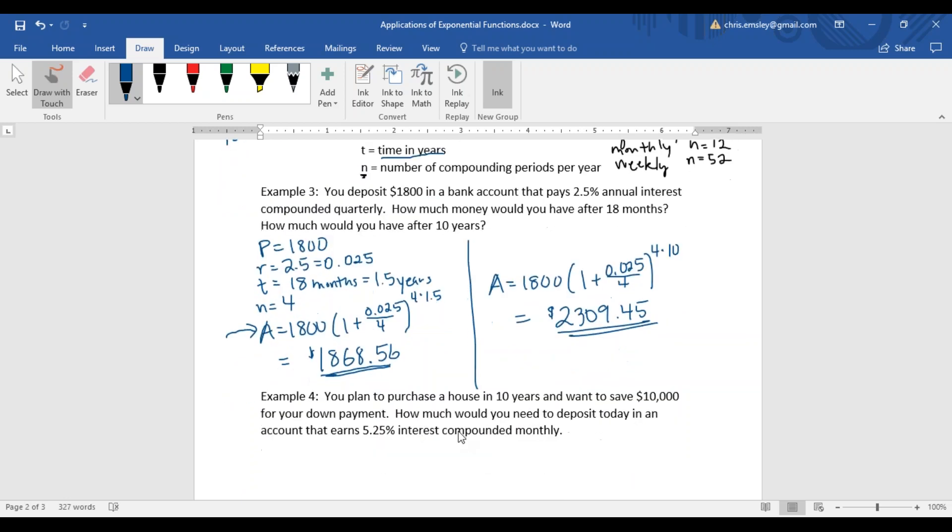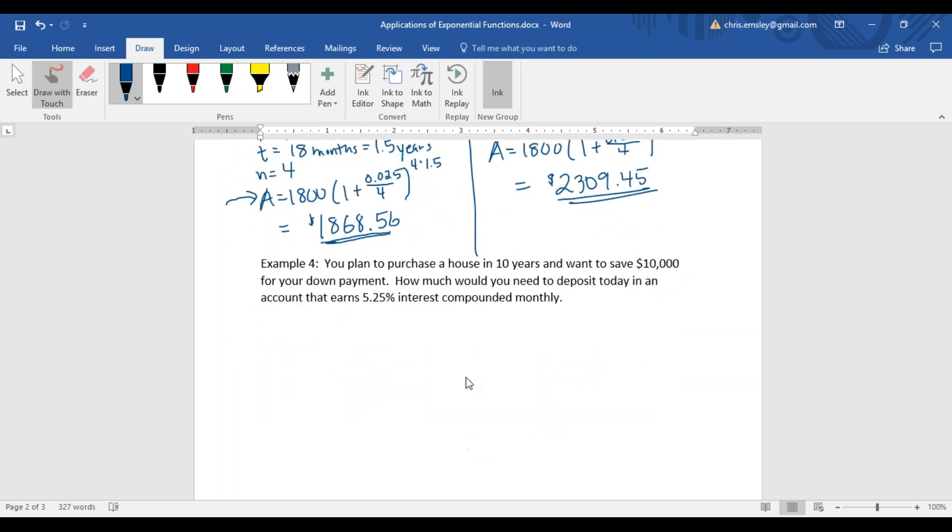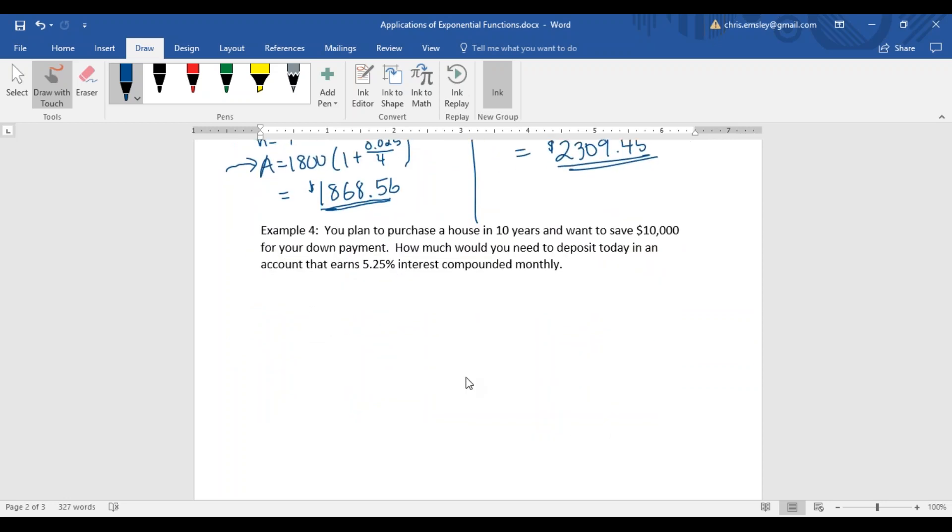Here's another compound interest problem. But in this case, they kind of turned it around on us. Make sure you read these carefully. They didn't tell us how much money we started with. In this problem, they told us how much money we are going to end up with. You plan to purchase a house in 10 years and want to save $10,000 for your down payment. How much would you need to deposit today in an account that earns 5.25% interest compounded monthly?